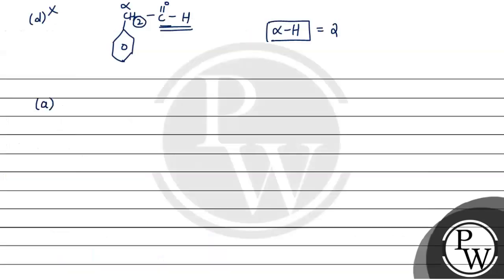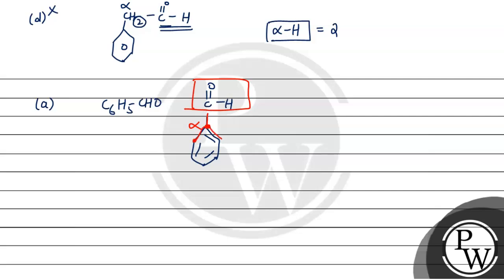So the answer is option A. Let's verify: option A is C6H5CHO — benzaldehyde. Drawing it, we have a benzene ring with a carbonyl group (C=O) and H attached. The carbon adjacent to the functional group is part of the aromatic ring — all four bonds of that alpha carbon are to other carbon atoms (including the pi bond in the ring). Therefore, C6H5CHO has no alpha hydrogen.